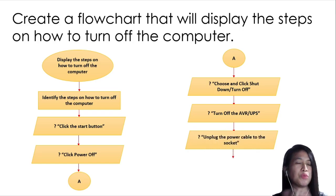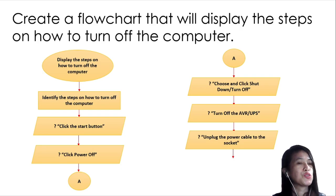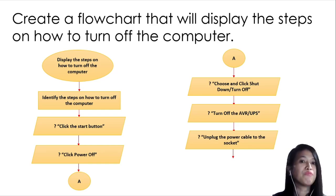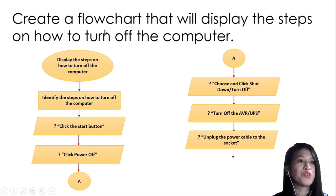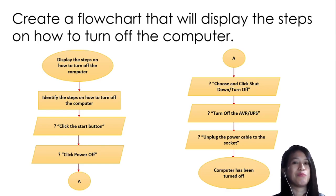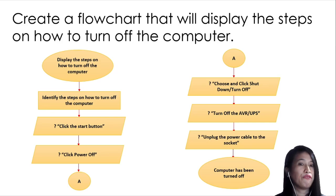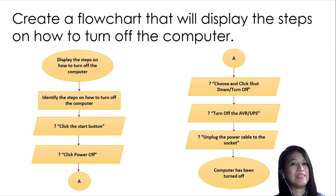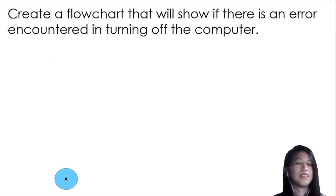We also tend to forget to unplug the power cable from the socket. These are the different steps needed to turn off the computer. Once you've displayed all the steps and answered the problem, you end your flowchart using the terminator symbol, indicating that the computer has been properly shut down.